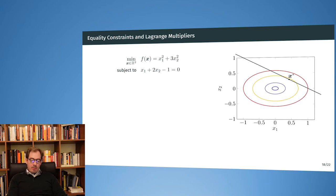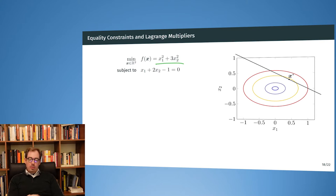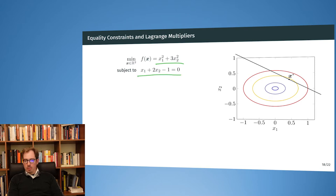Let's say we have a very simple optimization problem. We want to minimize x1 squared plus 3x2 squared. The trivial solution for that would be just 0 and 0. But here we are adding an equality constraint: x1 plus 2x2 minus 1 equals 0. We have an affine equality constraint and the solutions all have to lie on this line.